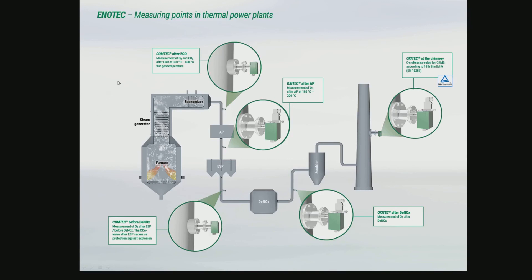So what are typical installation points for the Comtec system? In this power plant illustration, the first measuring point would be after the economizer, before the air preheater, for combustion control. The Comtec analyzer is used to optimize combustion and reduce harmful emissions. After the electrostatic precipitator, or ESP, the Comtec analyzer is used as a shut-off switch for safety monitoring and explosion protection. Generally, Comtec can be used in many combustion applications for process control or as a safety measurement.